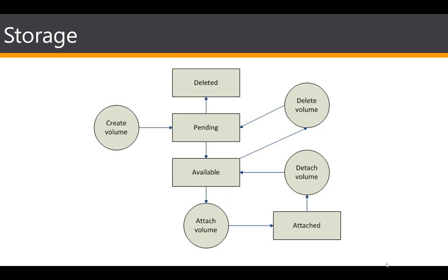The basic process for an EBS volume starts when a volume is created — it goes into the pending state, then moves to the available state. Once available, you can attach the volume to your EC2 instance. You can also delete the volume, which moves it back to pending and then to deleted. You can optionally detach a volume and attach it to a new EC2 instance — for example, if you've started a new EC2 instance and want to move storage over. This process flow for EBS volumes is considerably more robust than for instance store volumes.